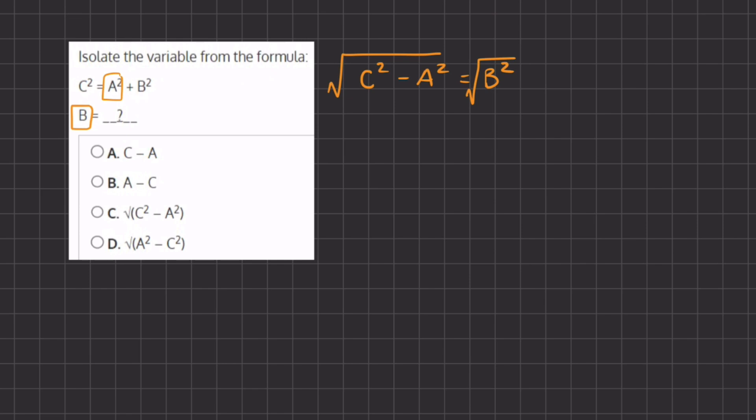And on the left hand side we have the square root of c squared minus a squared equals b, and now we have the isolated version of b.